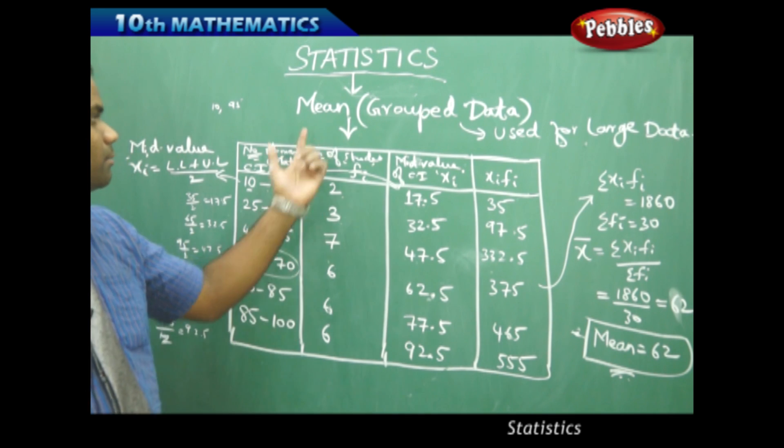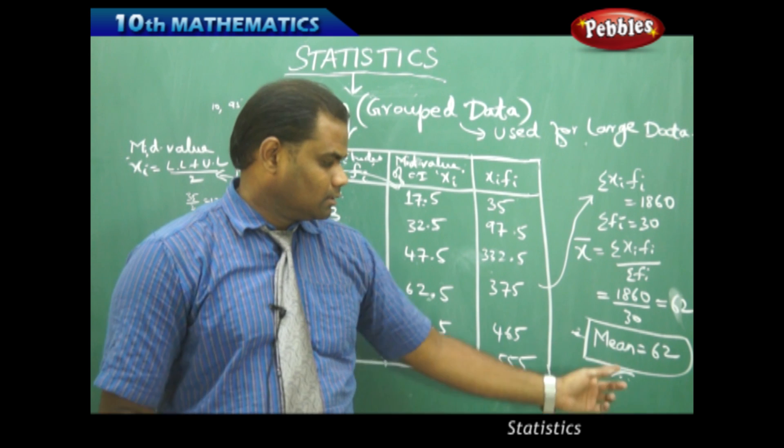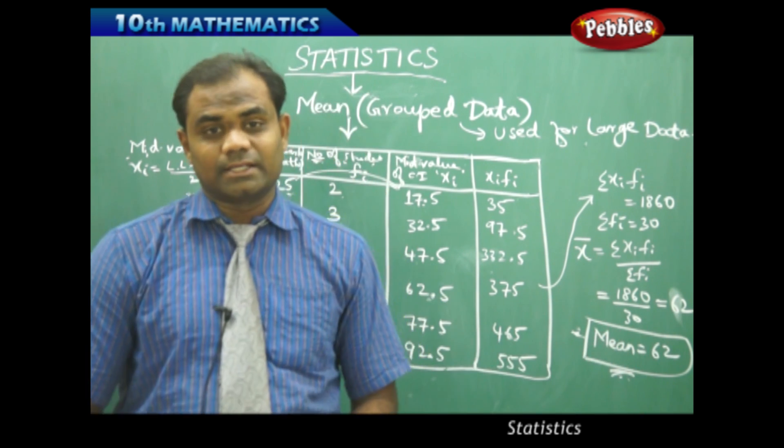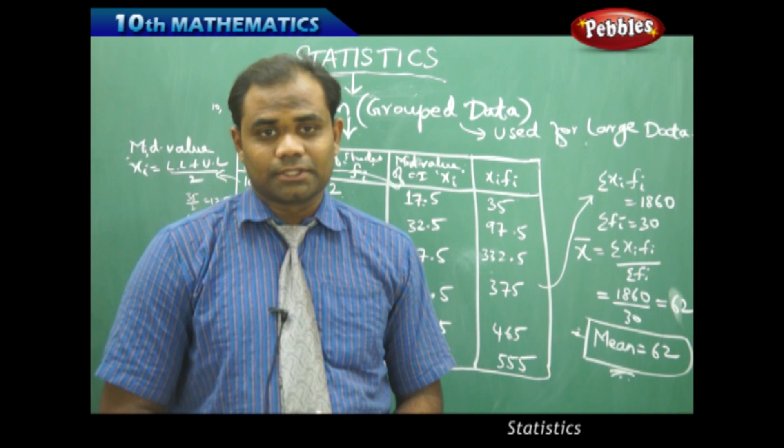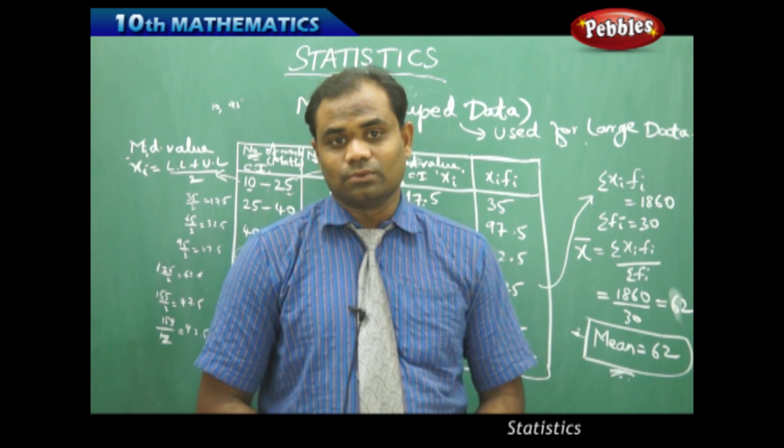That's how we understand mean of grouped data when the data is very large. My mean equal to 62 implies that on average the whole average of the class is approximately 62 marks.